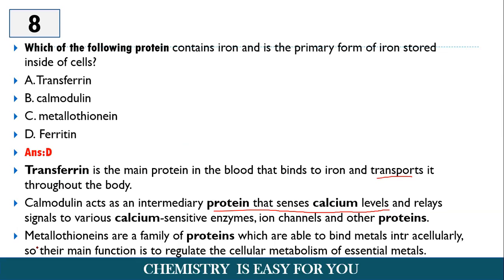So this can, it is not selectively binding or storing any one metal, but these are able to bind metals intracellularly and regulate their metabolism inside the cells. That is the function of metallothioneins. So these are the explanations of the other options. So ferritin is the one which is actually containing protein and store protein inside the cells.